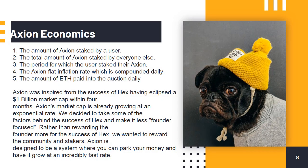Axion Economics: Axion generates interest through the idea of inflation. The Axion smart contract pays out Axion on 5 basic principles: 1. The amount of Axion staked by a user. 2. The total amount of Axion staked by everyone else. 3. The period for which the user staked their Axion. 4. The Axion flat inflation rate, which is compounded daily. 5. The amount of ETH paid into the auction daily.